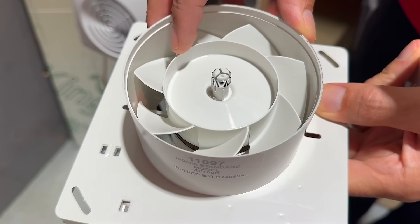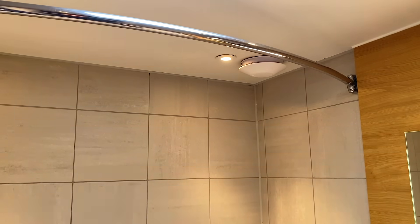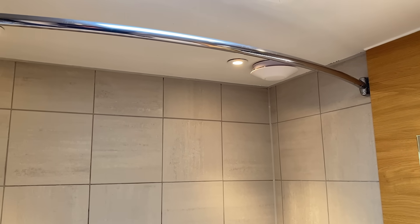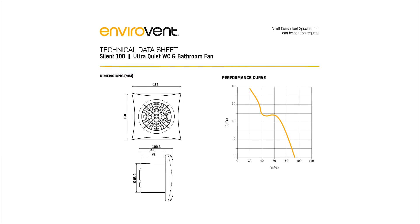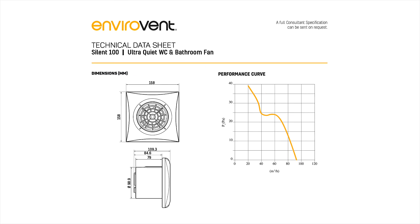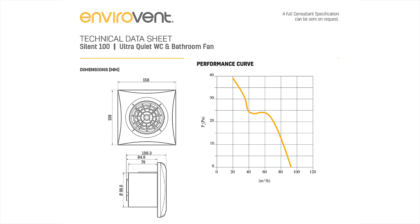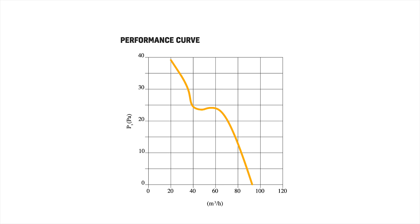So how can you gauge a fan's performance in a real life use case when on paper they seem to have similar performance? A clue is given in the fan curve, which is often tucked away on the manufacturer's data sheet. An extractor fan performance curve shows how a fan's ability to move air — its airflow rate — changes as it encounters resistance in the system, or what's referred to as static pressure.